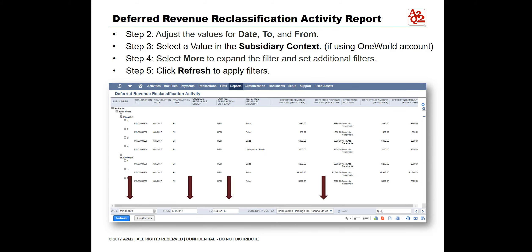To see the report you want, adjust the values in the date box in the lower left corner. Add dates in the From and To boxes. If using One World, select a value in the Subsidiary Context box. You can select More to expand and set additional filters. Once you have entered the data, click Refresh to apply the filters you set.